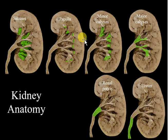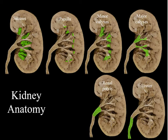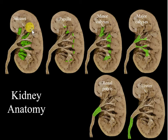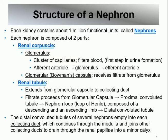The urine flows from the cortex and medulla pyramids to the papilla tip, then to the minor calyx, then to the major calyx, then to the renal pelvis, then to the ureter, then to the bladder. It's important to remember this sequence: nephrons → papilla → minor calyx → major calyx → renal pelvis → ureter → bladder → urethra → outside.